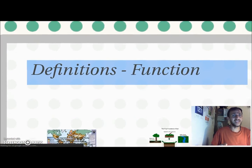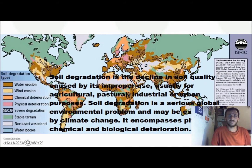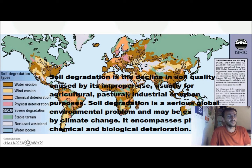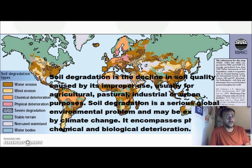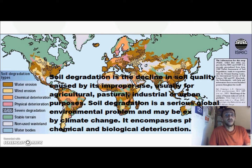I will read it out and talk a little bit about this definition because it's quite important to get this right. Soil degradation is the decline in soil quality caused by its improper use, usually for agricultural, pastoral, industrial or urban purposes. It is a serious global environmental problem and may be exacerbated by climate change. It encompasses physical, chemical and biological deterioration.